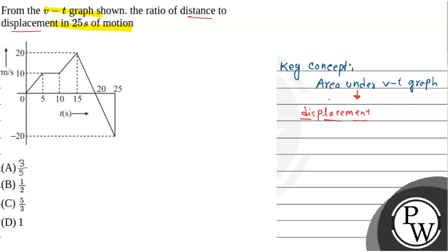On this graph here, we need to find the area. So let's say this triangle is area 1, this is area 2, this is 3, this is 4, and this is 5.